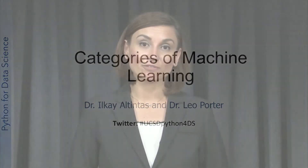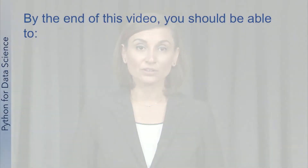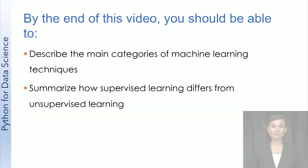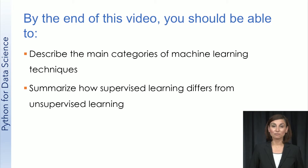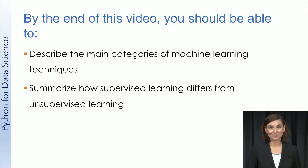There are different categories of machine learning techniques for different types of problems. The main categories we'll discuss are classification, regression, cluster analysis, and association analysis. In this video, we'll go over each of these in detail. By the end of this video, you should be able to describe the main categories of machine learning techniques and summarize how supervised learning differs from unsupervised learning.